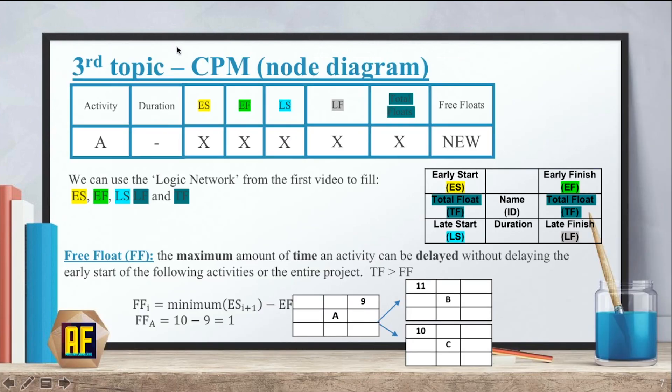Our next topic, which is also CPM, is the node diagram. We basically took the logic network and transferred it into a diagram. We had the activity, duration, early start, early finish, late start, late finish and total floats. And we had another new concept called free floats. And basically we can take our three by three square and set the numbers over here. Once we finish setting everything in the node diagram, we can calculate the free floats.